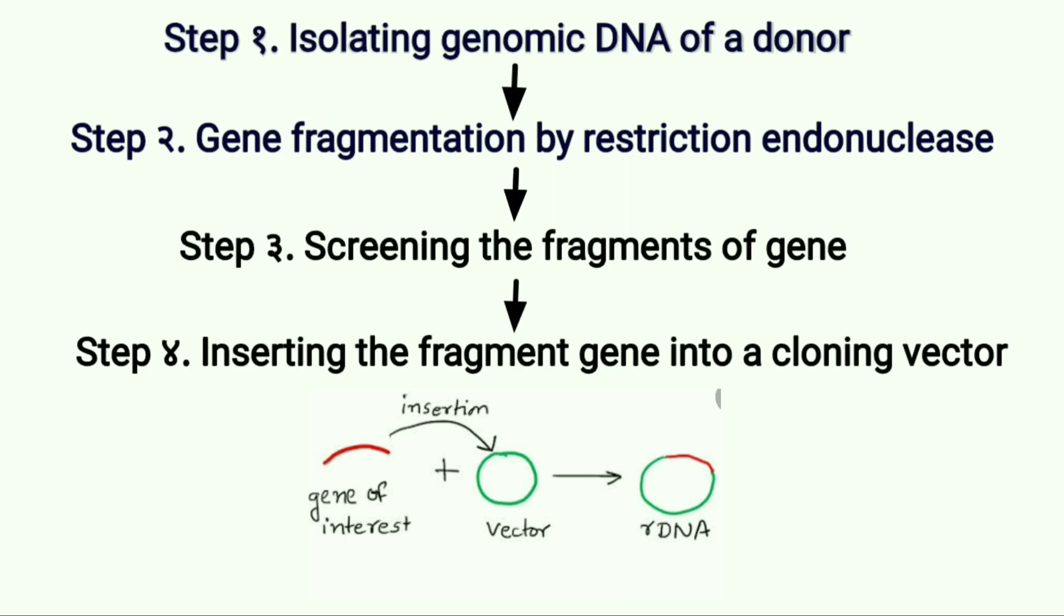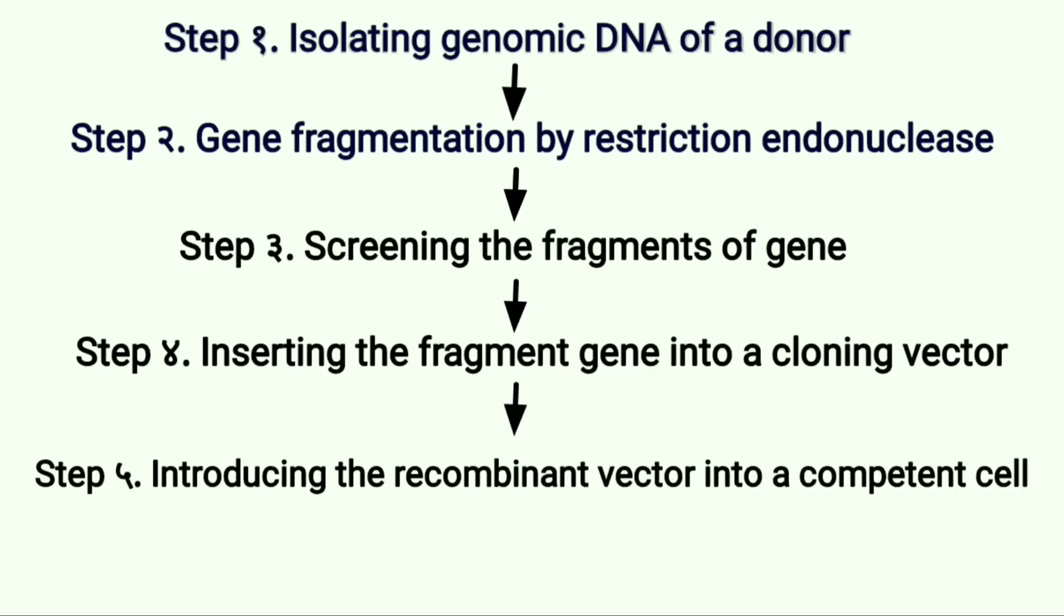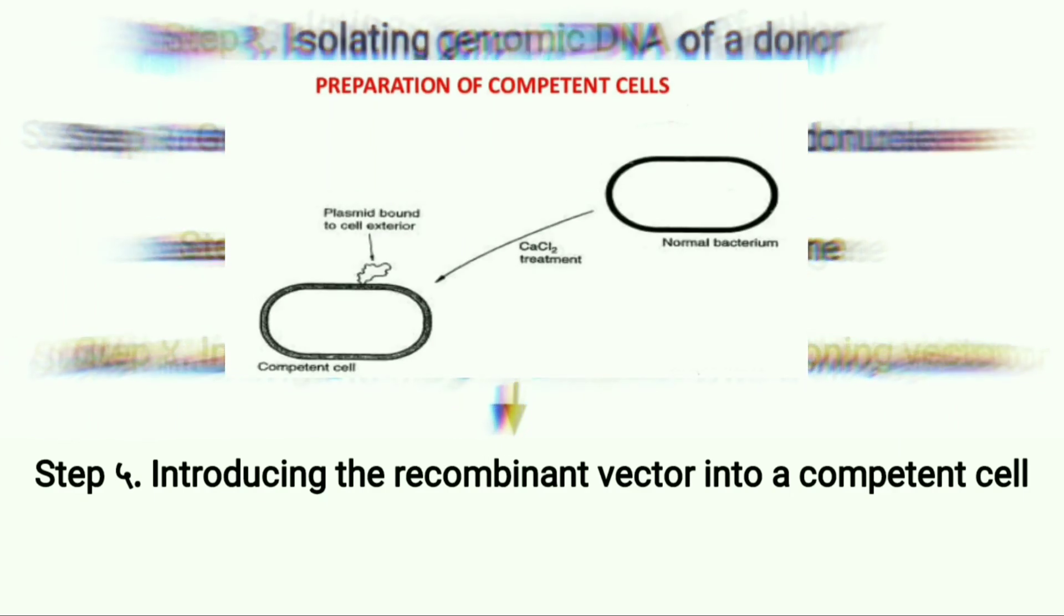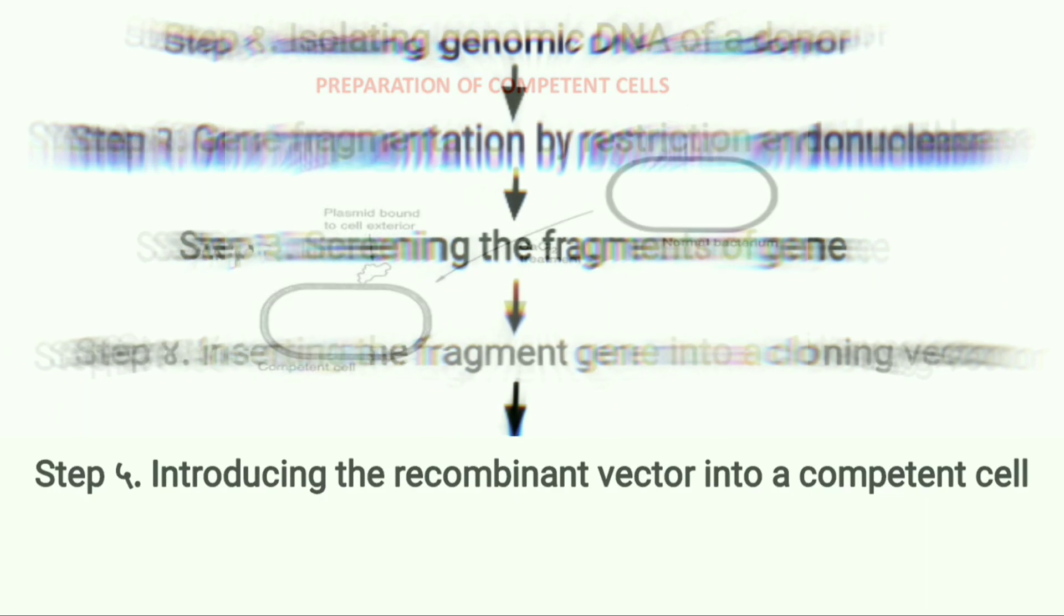Cloning vector is a small piece of DNA which can take in the fragment and transfer it into a competent host cell. Competent cells are bacterial cells which accept the extra-chromosomal DNA or plasmids in its cells.